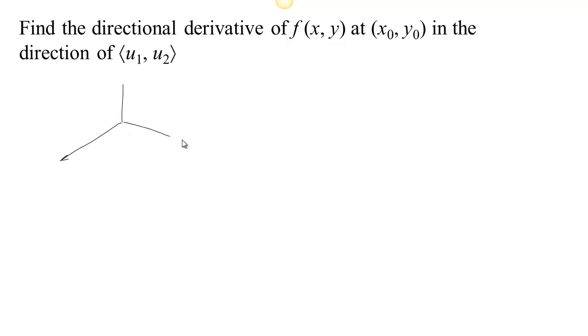Okay, so again, our picture is just that we have our two inputs, x and y, and then our output, f, determines kind of an altitude so that we end up with some kind of surface here. And we're going to be starting at some point, (x₀, y₀).